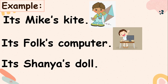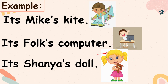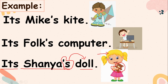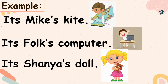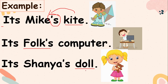Another example: this is Shania and this is Shania's doll. We cannot say 'Shania's doll' without the apostrophe — that's wrong, it's not correct grammar. We need to add apostrophe 's' so we know the doll belongs to Shania. So: It's Mike's kite — the kite is owned by Mike. It's Folk's computer — the computer is owned by Folk. It's Shania's doll — the doll is owned by Shania. We just need to add apostrophe 's'.